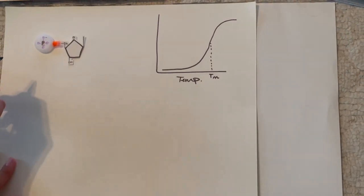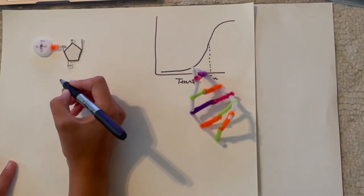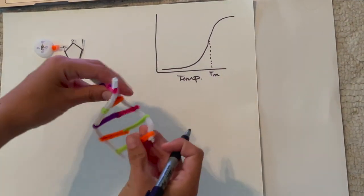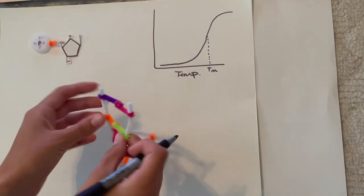So if DNA was in a salt buffer, the salt would make the negative charge backbone more stabilized, so the DNA would not separate as easily.